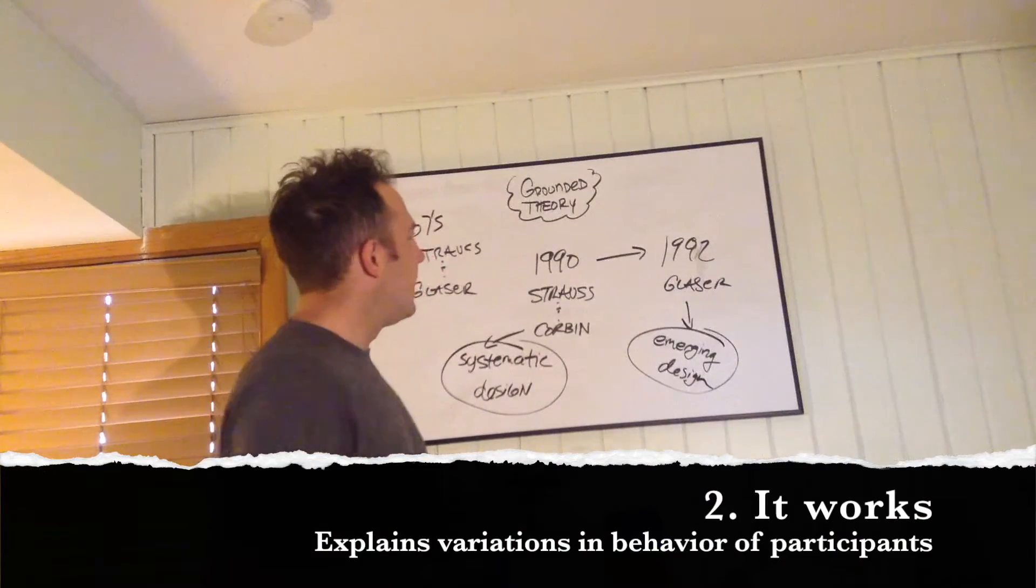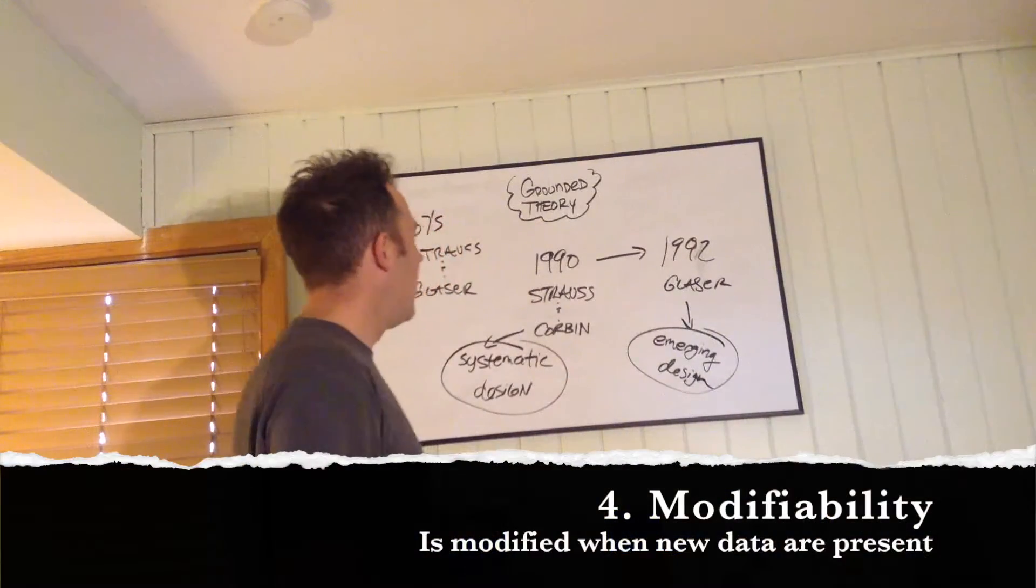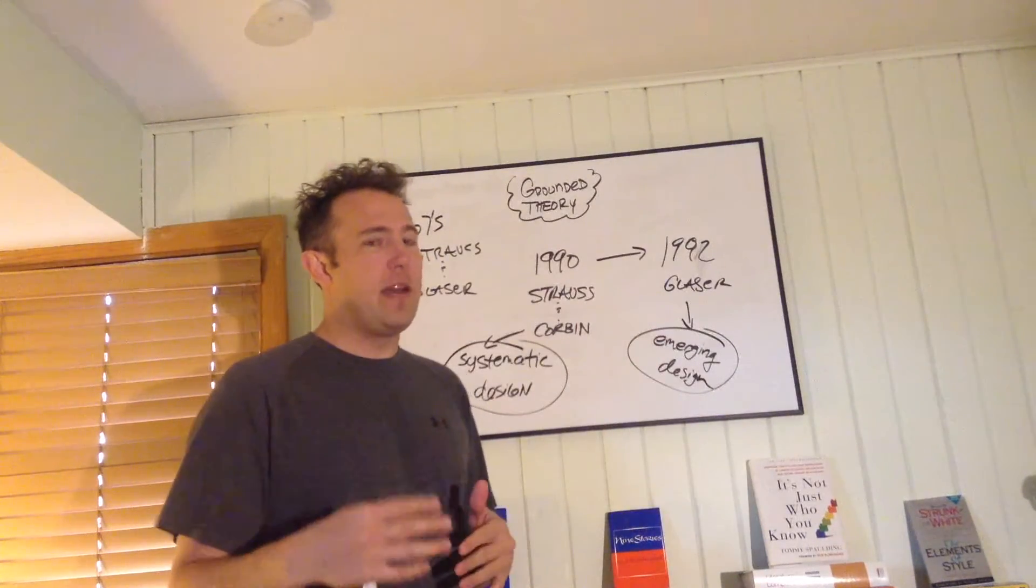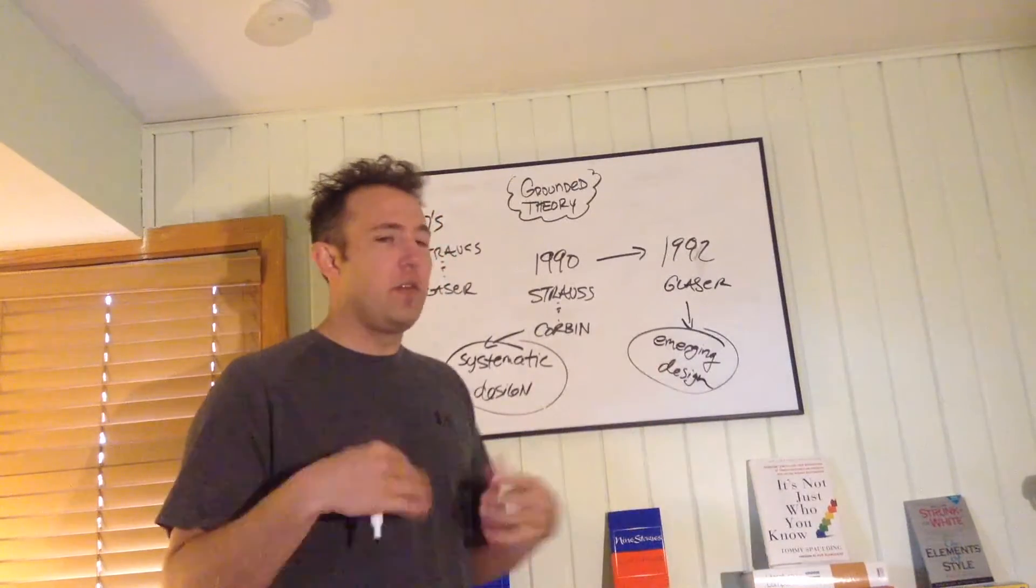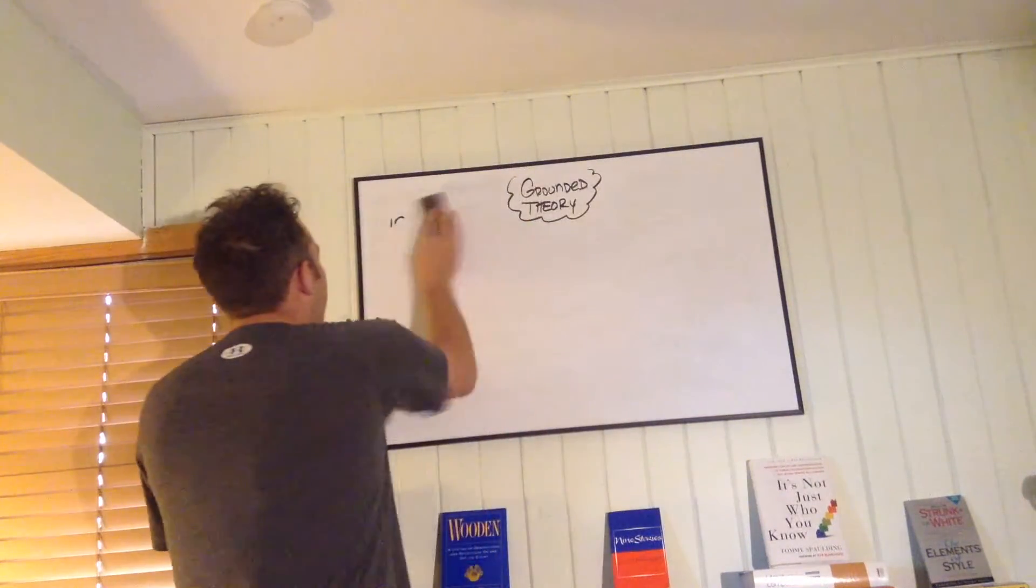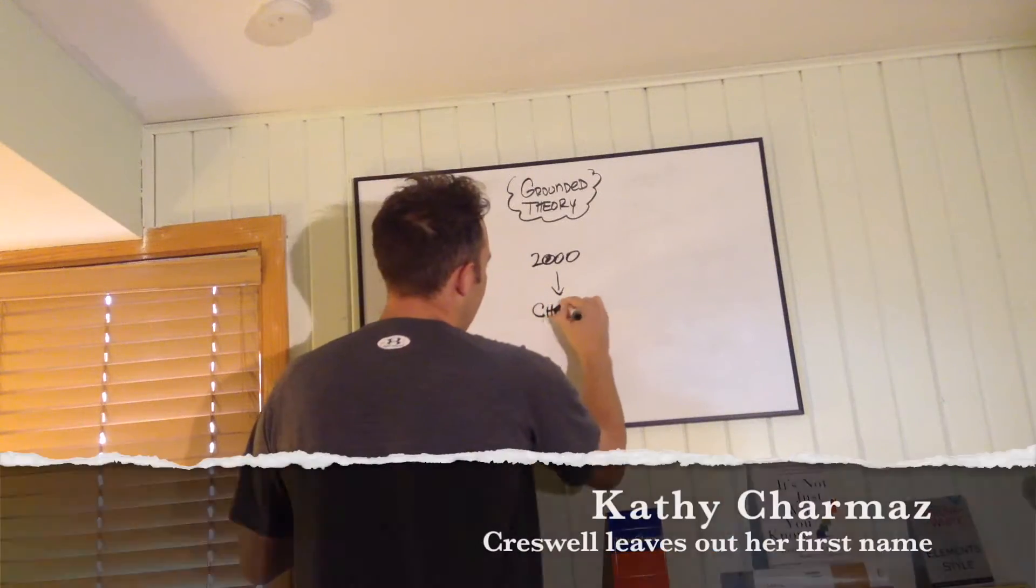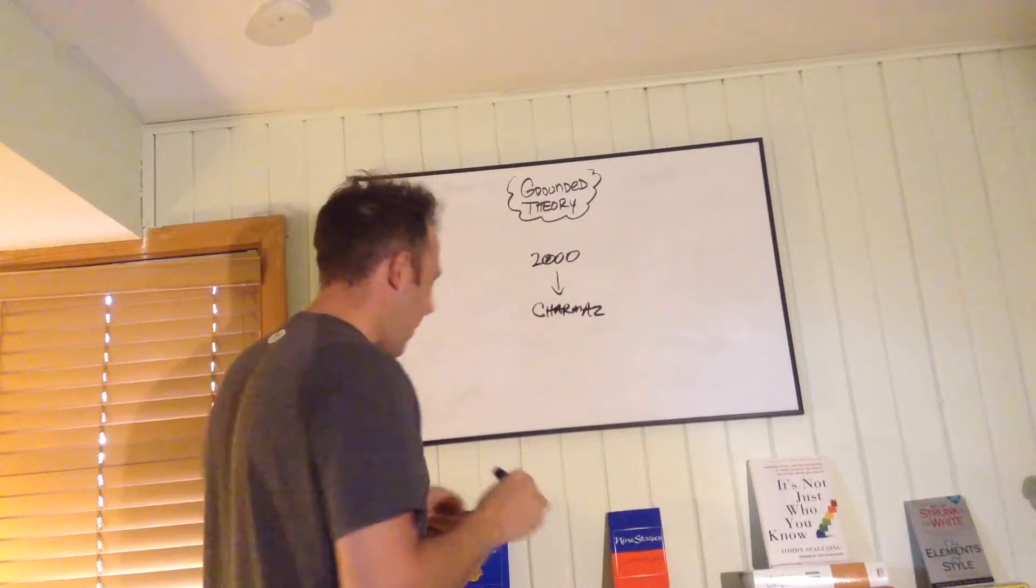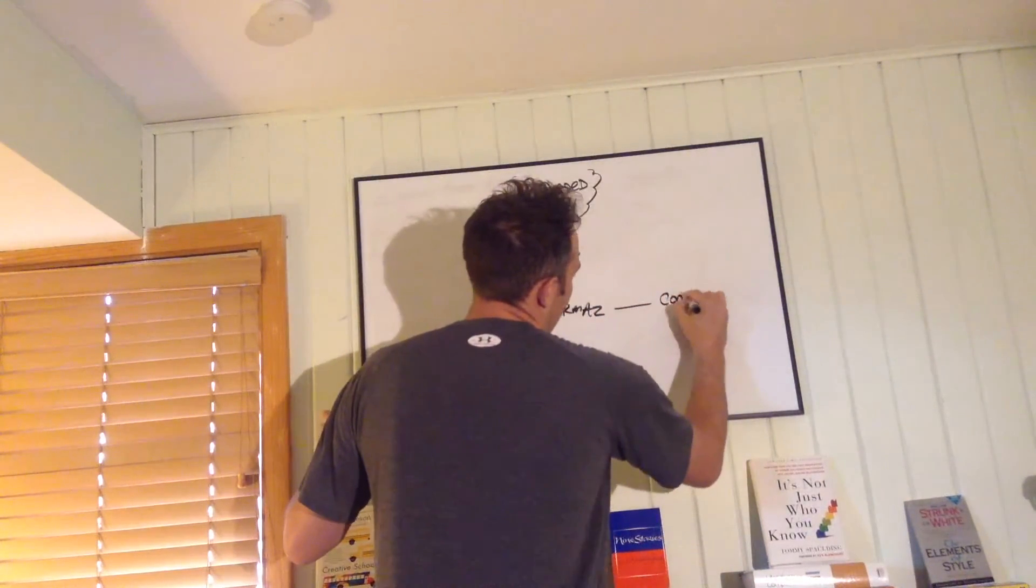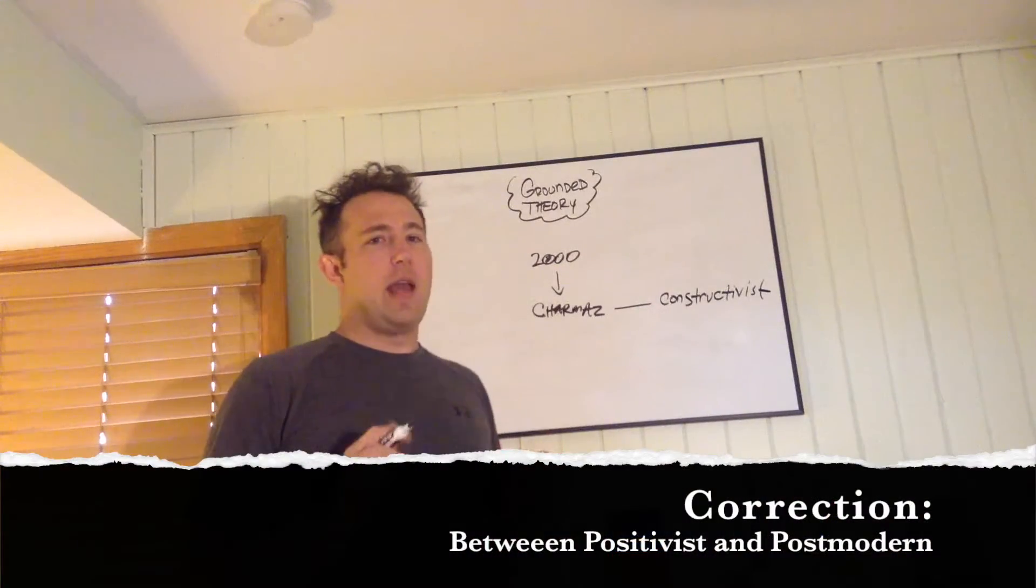So in 1992, Glasser responds, and all of a sudden now, grounded theory has two prevalent design approaches to how it should be done. In the academic community, it's important to note that quantitative researchers actually really respected the idea of grounded theory because of the rigor involved, the rigor that it takes, the amount of detail, the amount of time, the amount of data collection that it takes to create a theory. Quantitative researchers really respect it. So in the academic community now, we've got two ideas of what grounded theory looks like. Well, in the year 2000, a gal Sharmaz comes about with constructivist design.